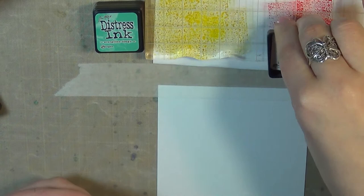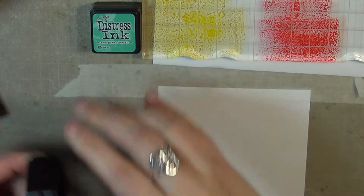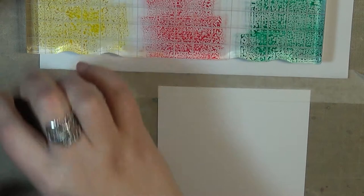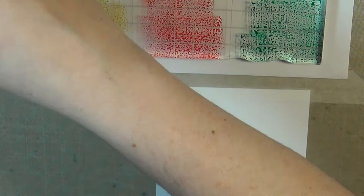I'm putting down mustard seed, red barn, and evergreen bough. I think these three colors are a really pretty combination—really bold and bright and fun. I'm keeping this under control as far as the watercolor and how the placement is going.